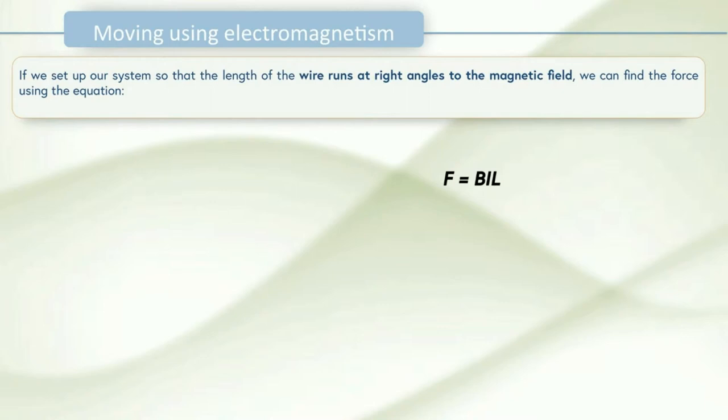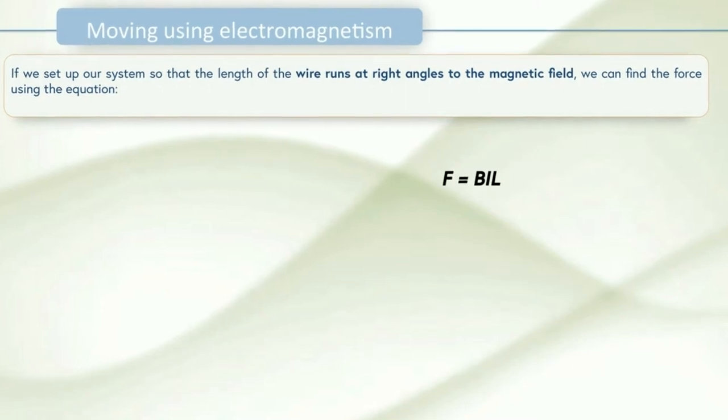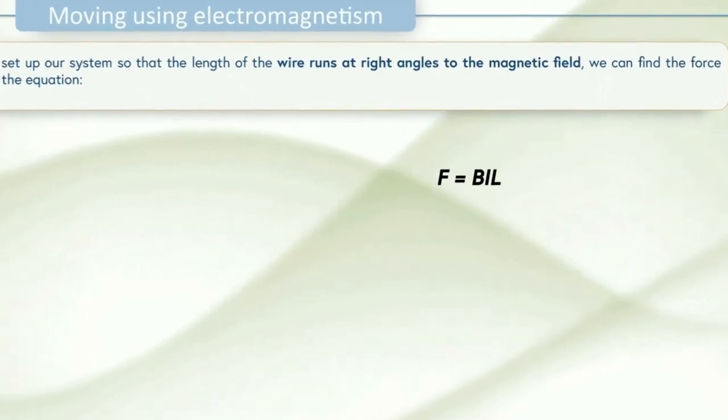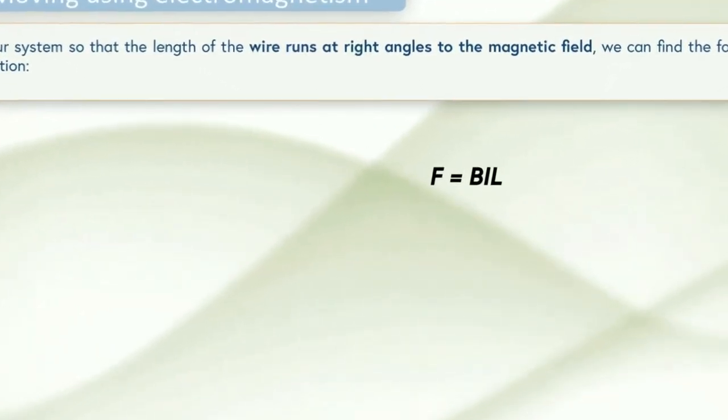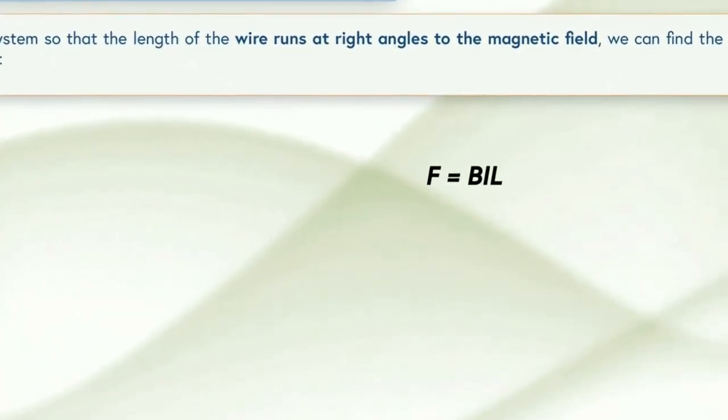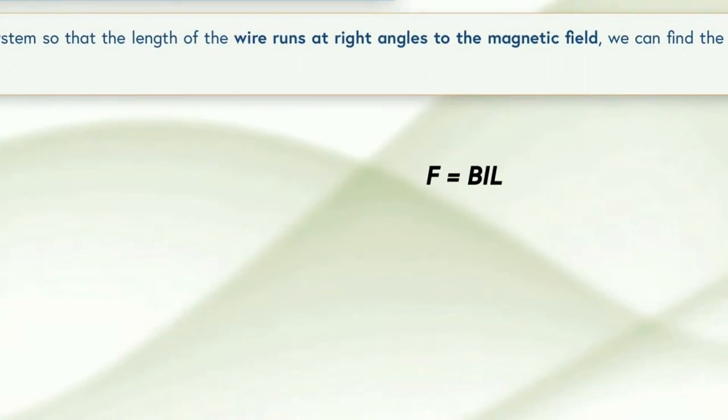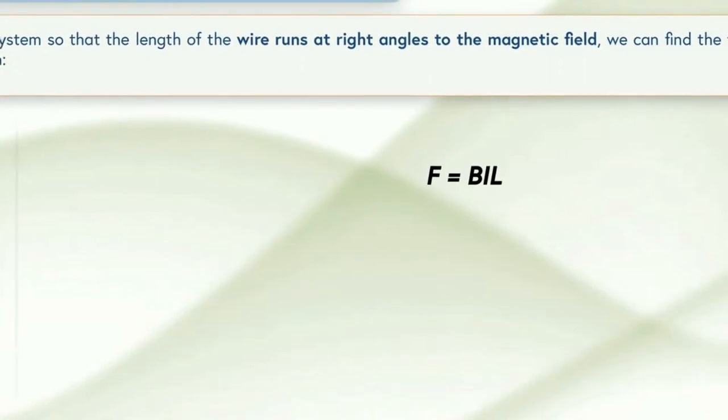If we set up our system so that the length of the wire runs at right angles to the magnetic field we can find the force using the equation F is equal to BIL or Bill if you want a nice way to remember it. So let's look at this and see what each term actually means.